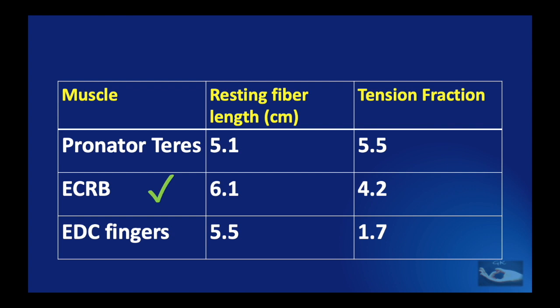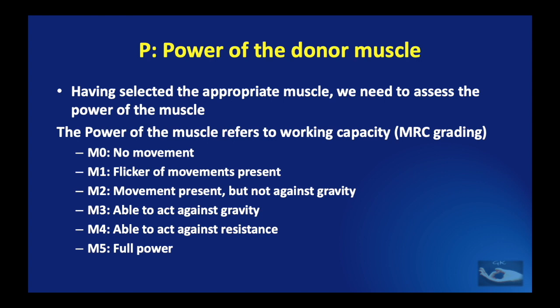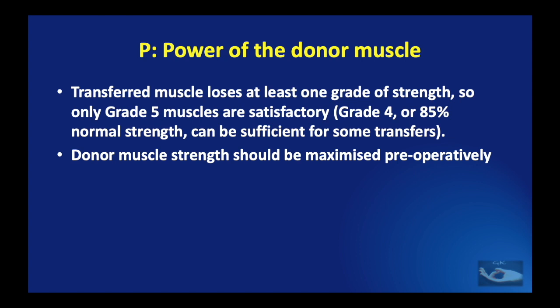We also need to consider the working capacity of the muscle according to the MRC grading: M0 being no movement, M1 being flicker of movements, and M5 being full power. This is important because a transferred muscle loses at least one grade of strength, so only grade 5 muscles are satisfactory as donors for tendon transfer. If the muscle planned for transfer is not yet grade 5, the donor muscle strength should be maximized pre-operatively.